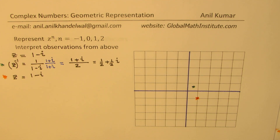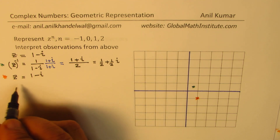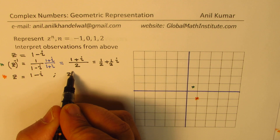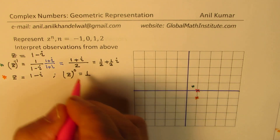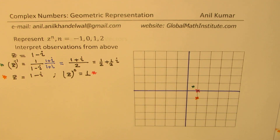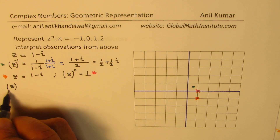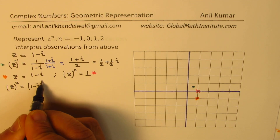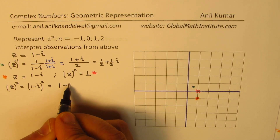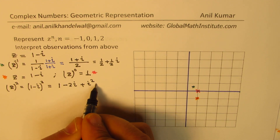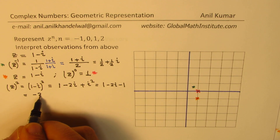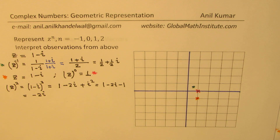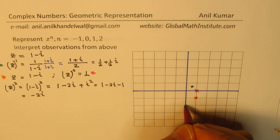In between, we forgot z to the power of 0, so let me also write that down: z to the power of 0 is actually 1, which is right there on the real axis. The next point we'll consider is z squared, which is 1 minus i whole squared, and that equals 1 minus 2i plus i squared, or 1 minus 2i minus 1, which equals minus 2i. So minus 2i will be this point on the imaginary axis.